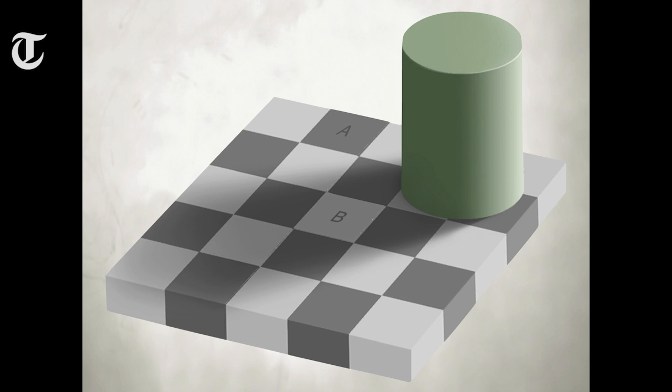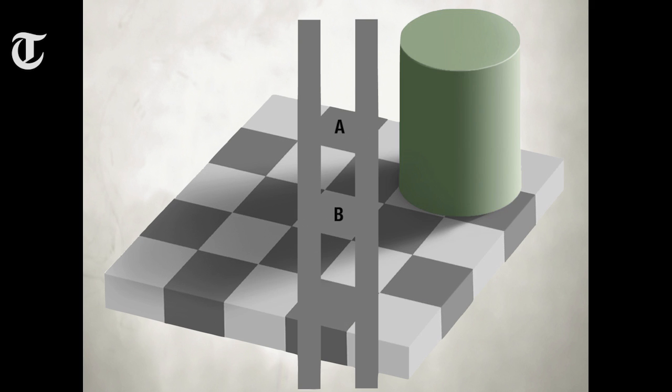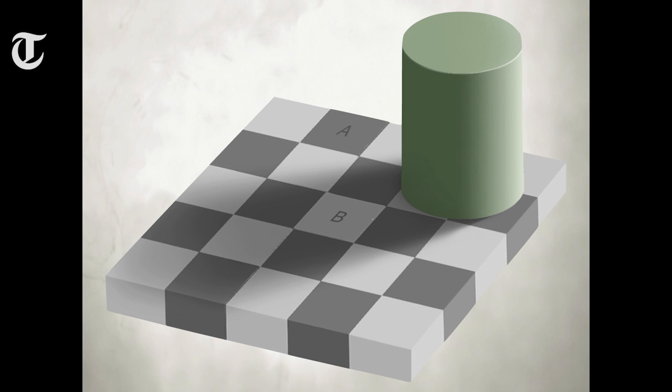And I can prove that to you by taking away half the image so that we lose the cylinder that casts a shadow. And even more convincingly by painting grey lines of the same shade across the image — now you can really see that it's the very same shade of grey. But if we go back to the first image, still they look different.